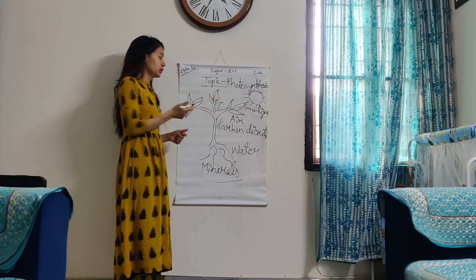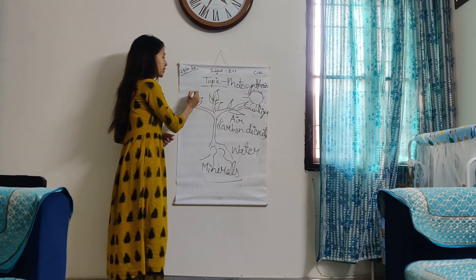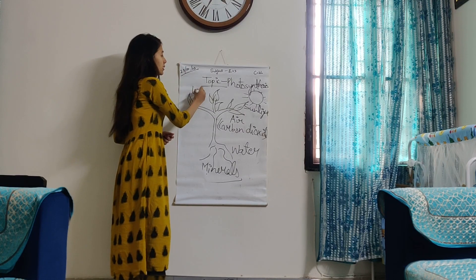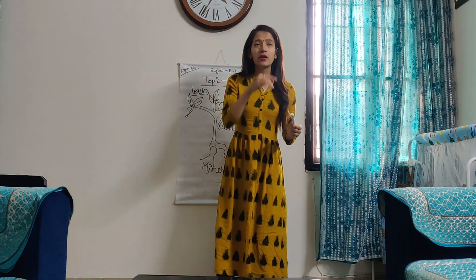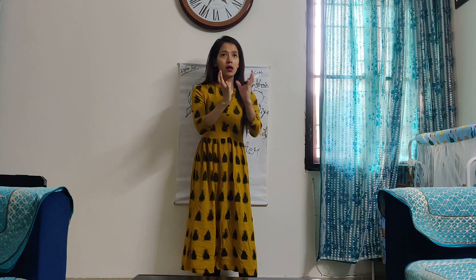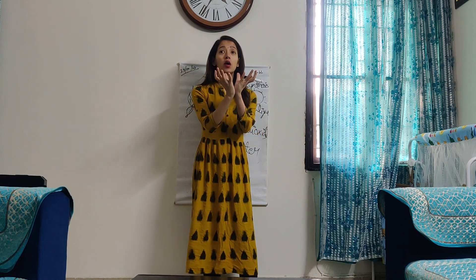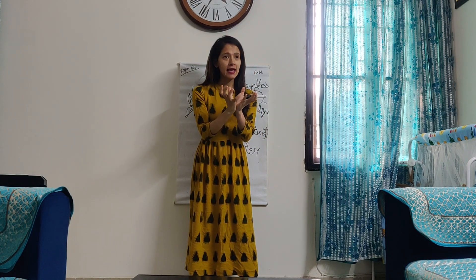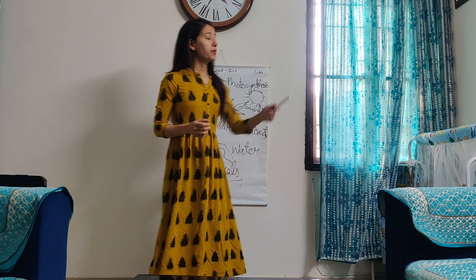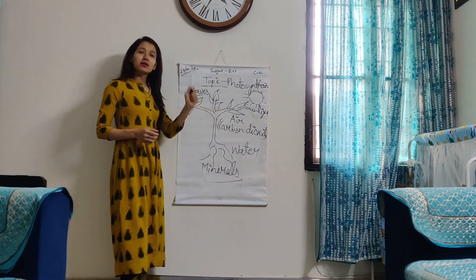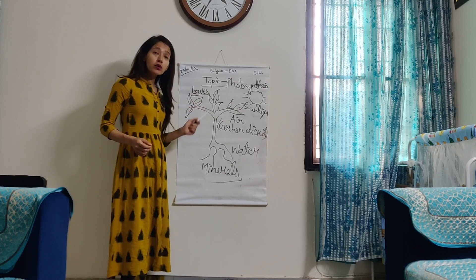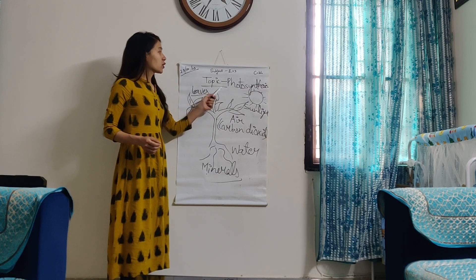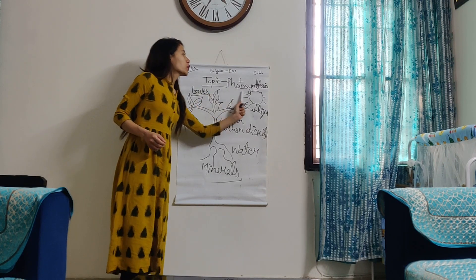So let's revise what are the things needed by the plant to prepare their food: sunlight, air or carbon dioxide, water, and minerals. All these things are needed for the plants to prepare their food. And where do they prepare their food? They prepare their food in the leaves. We prepare our food in utensils, but plants prepare their food in the leaves. The process of preparing food by the plants is called photosynthesis.